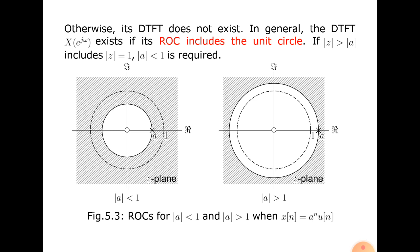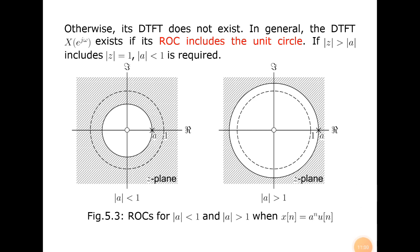The slide shows the ROC for |a| < 1 and |a| > 1 when x(n) = a^n · u(n). In the z-plane with real and imaginary axes, the pole is at z = a. When |a| < 1, the pole is inside the unit circle and the ROC is the exterior — the DTFT exists. When |a| > 1, the pole is outside and the ROC does not include the unit circle. This concludes the ROC topic — the next topic will be discussed in the next class. Thank you, students.